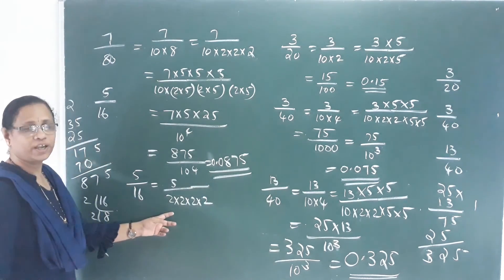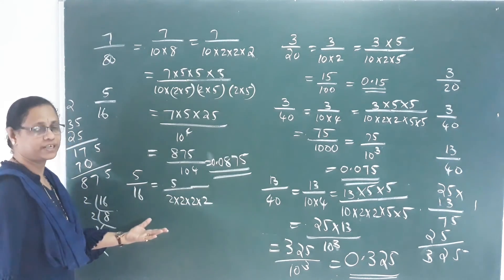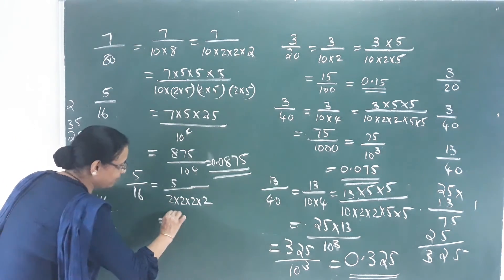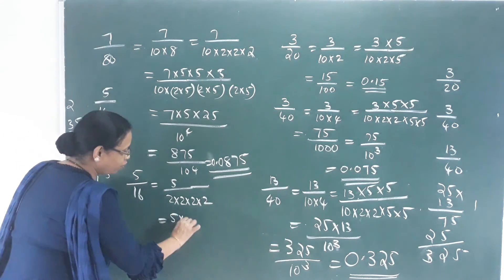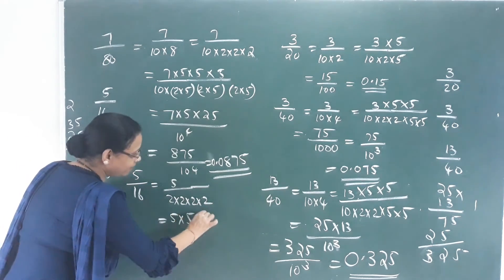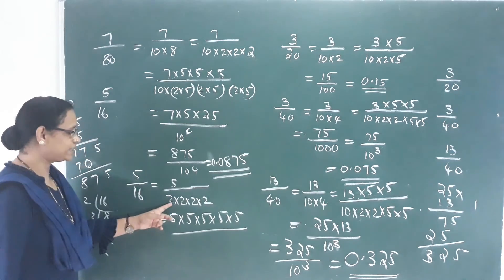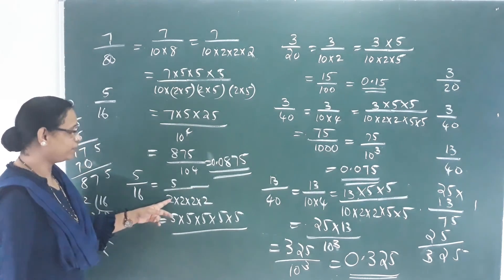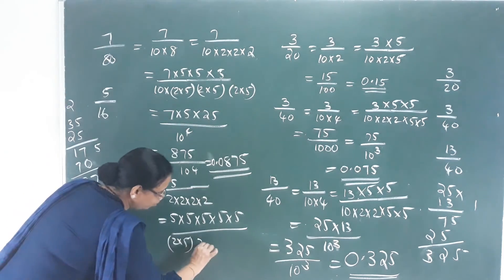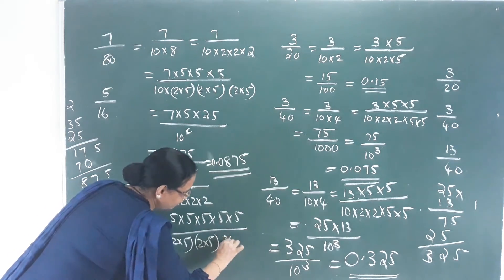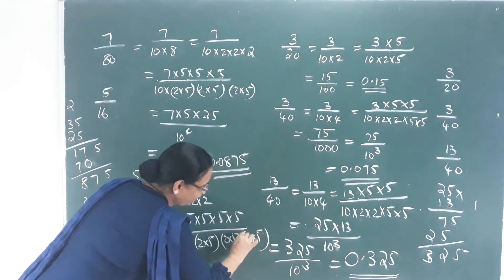So 5 by 2 into 2 into 2 into 2. We multiply four 5s on numerator and denominator. Four 5s are already here, giving 2 into 5 four times. So we have 4 decimal places.